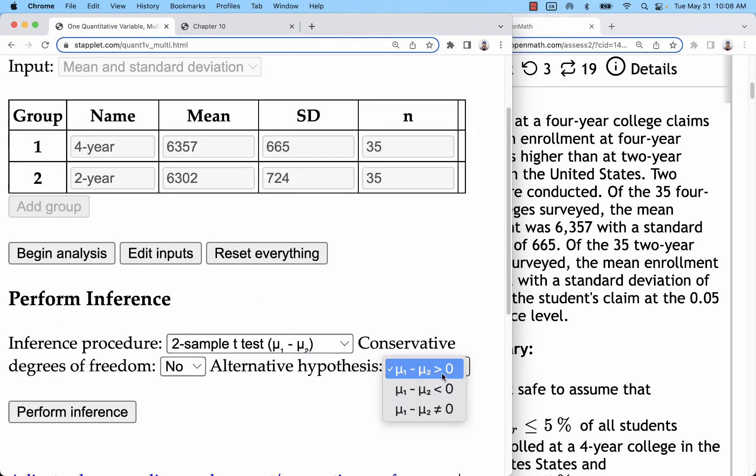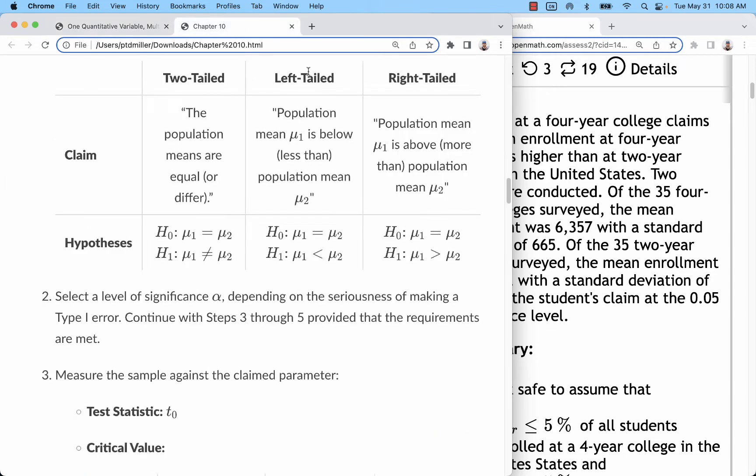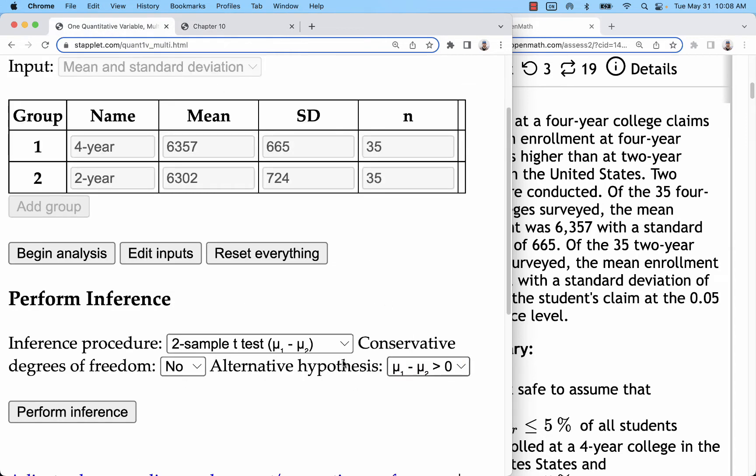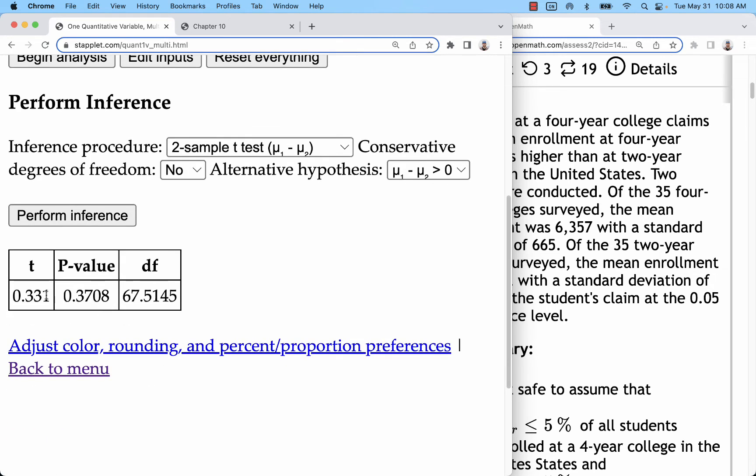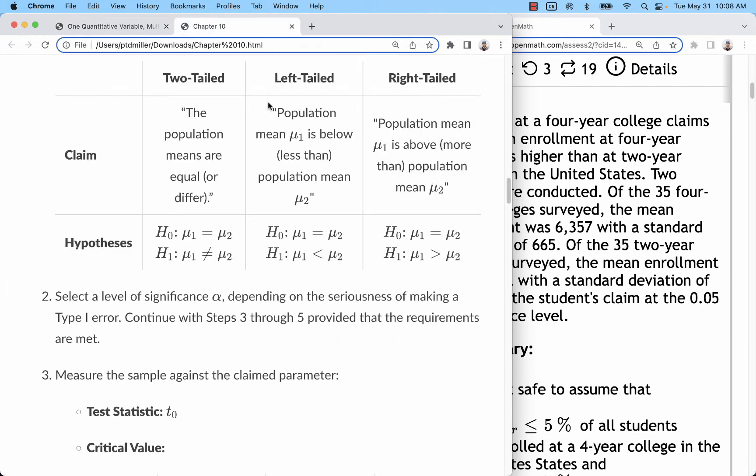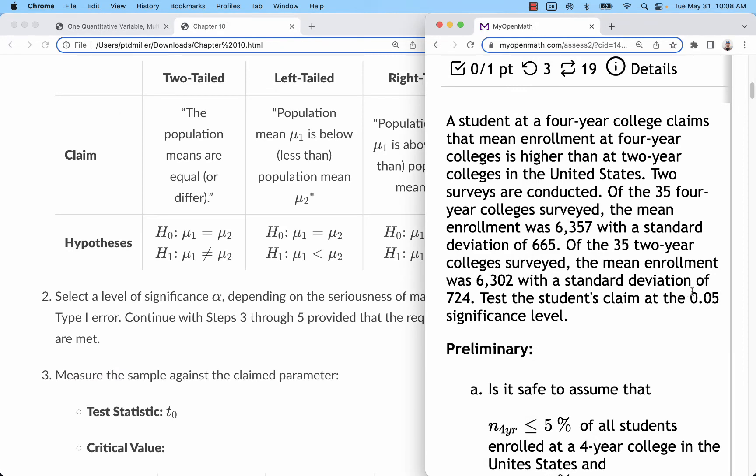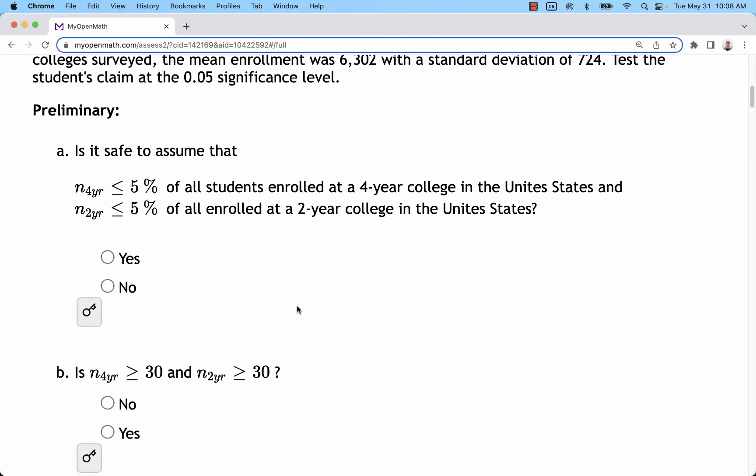So that's kind of how you interpret this here. The other way you could do it is just look at it as right tail, left tail, two-tail. Here we have right tail, left tail, two-tail, kind of in reverse order. You don't need to change this degrees of freedom. We're going to keep that by the default, which is a no. Perform inference. You've got your t-test statistic, which is on the right side, about a third of a standard deviation to the right of the mean. That's not very remarkable. We end up with a pretty high p-value. That p-value is going to be more than alpha, which in this problem is 0.05.